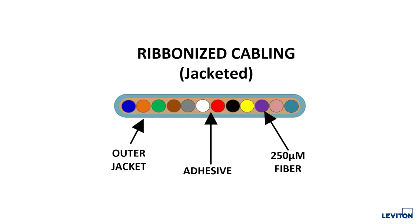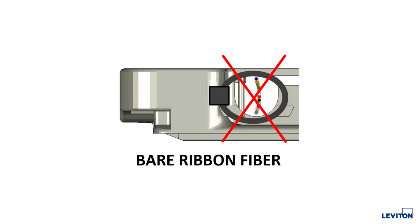If routing ribbon fiber into the module, all ribbon fiber must be furcated into tubing or a breakout kit. Routing bare ribbon fiber directly to the module may result in damage to the fibers.